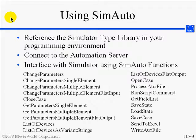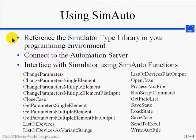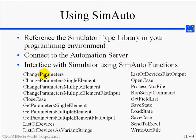SimAuto can be used with just about any programming environment that allows you to reference an external type library. The first step is to make sure that you reference the Simulator Type Library from your external programming environment. A lot of times this will be handled automatically when you install and run Simulator, but you might need to check in your programming environment to make sure the Type Library is available. Then, within your program, you issue commands to connect to the SimAuto automation server. Once a connection is established, you can interface with Simulator using several SimAuto functions.